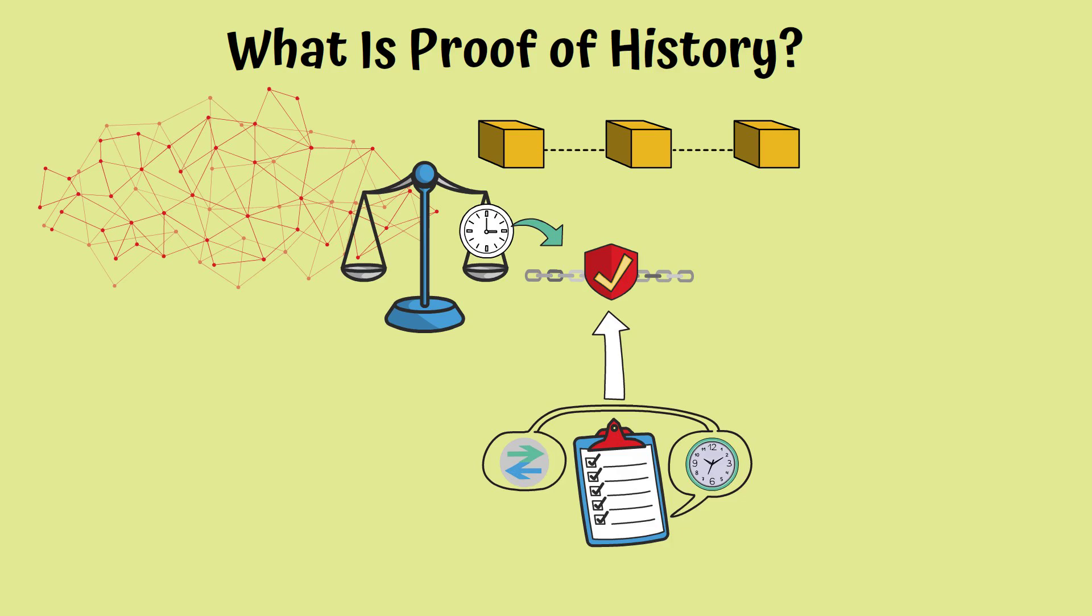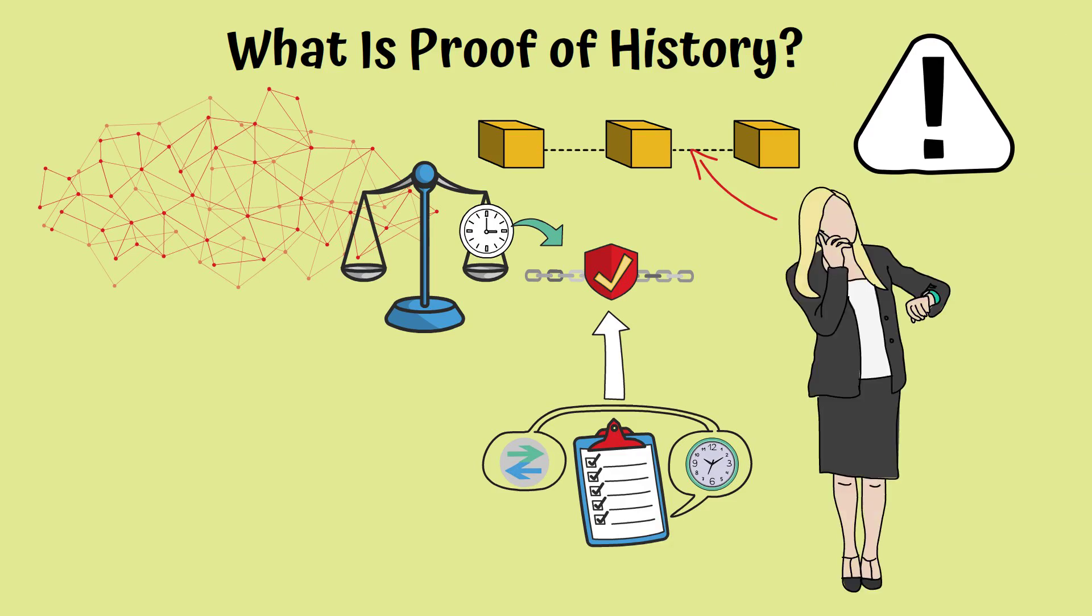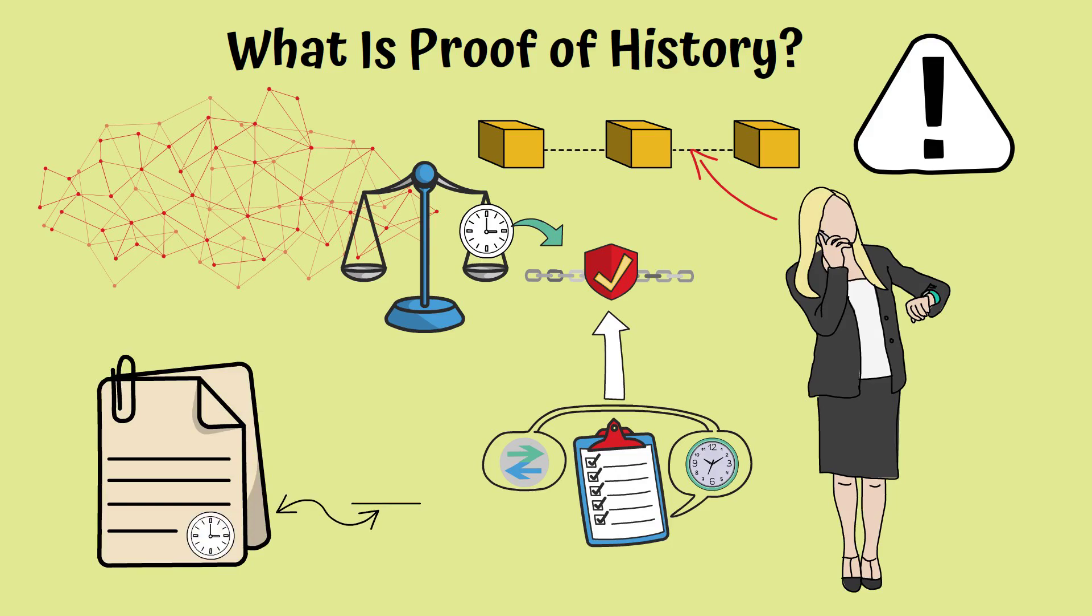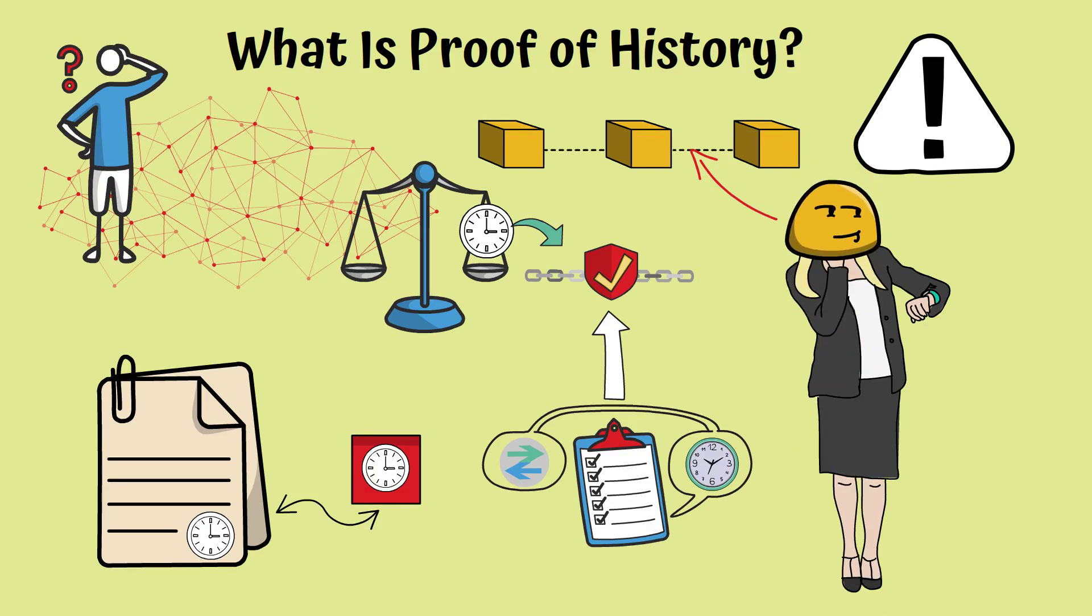This makes timestamping very important because it lets the network know that transactions took place in a particular sequence. In other words, proof of history lets you create a historical record that proves an event took place at a certain moment in time. It is not different from the time card stamp example we gave at the beginning of the video. Does it make sense so far? Stay with us, it only gets better.